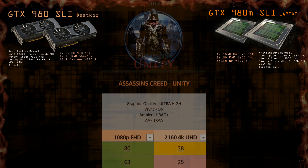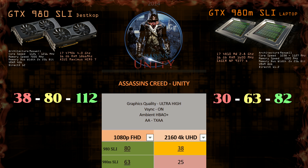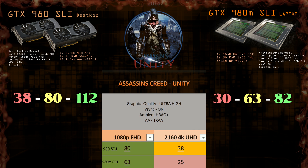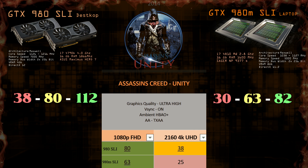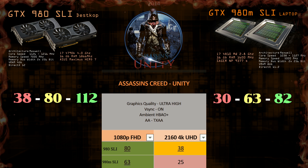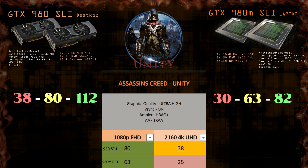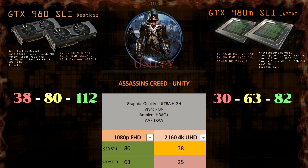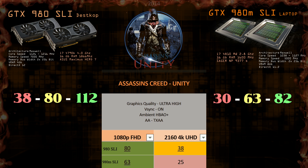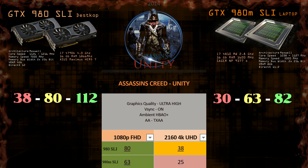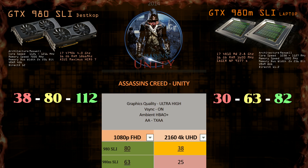Let's start with Assassin's Creed Unity and see how well these powerful GPUs perform. Average on desktop 990 SLI is 80 FPS and the 990M SLI is 63 FPS. There is a significant difference, but surprisingly the laptop 990M is handling this game very well. Evidence for that is also in the 4K resolution benchmarks: 38 compared to 25 are very interesting numbers, and laptop GPUs shouldn't be embarrassed for this at all. On SLI we did have big frame drops and the game is unstable due to optimization.